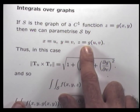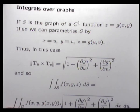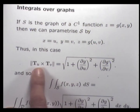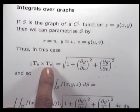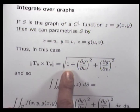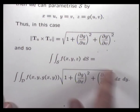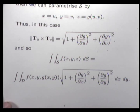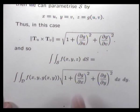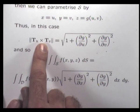To parametrize, let x equal u, y equals v, and z equals g(u, v). In that case, you can show that the magnitude of the cross product of the tangent vectors is this expression. What you can do then is replace this in your surface integral — it's easier to compute partial derivatives quickly rather than work out a cross product and then find its magnitude.